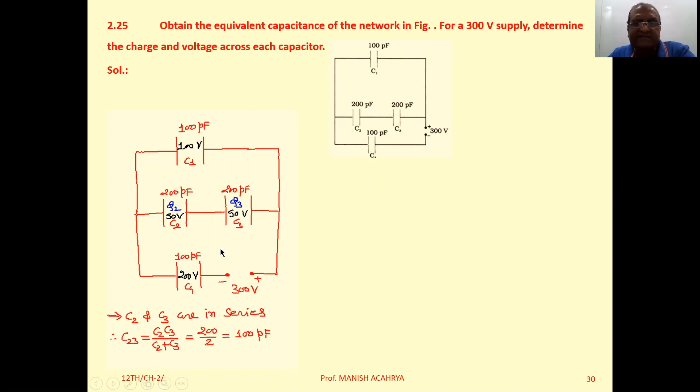Let's simplify the circuit step by step. First of all, between the points A and B these two capacitors C2 and C3 are in series.